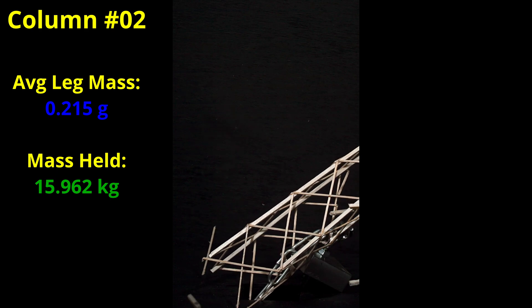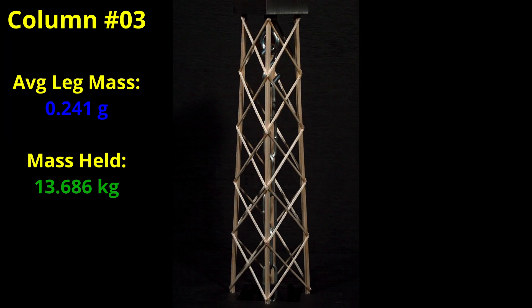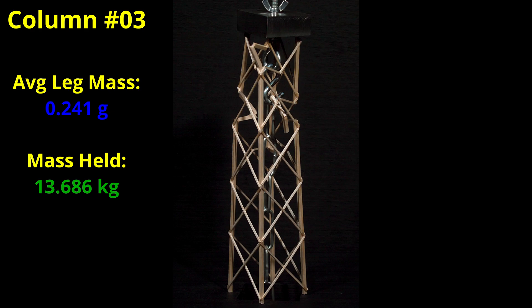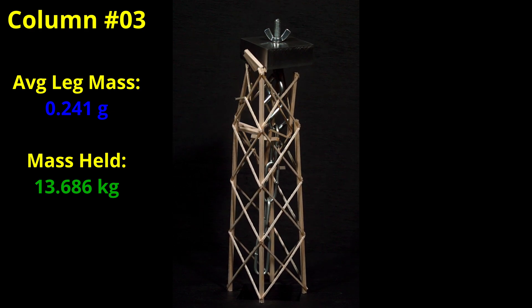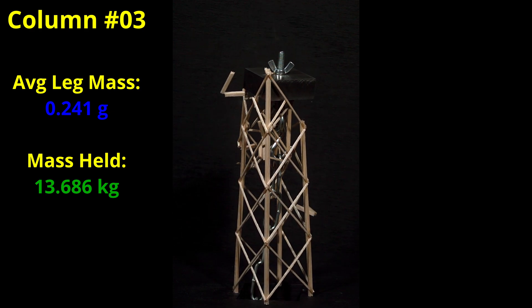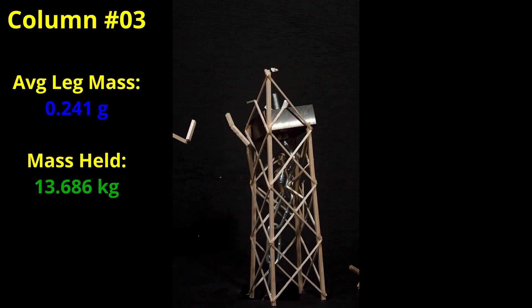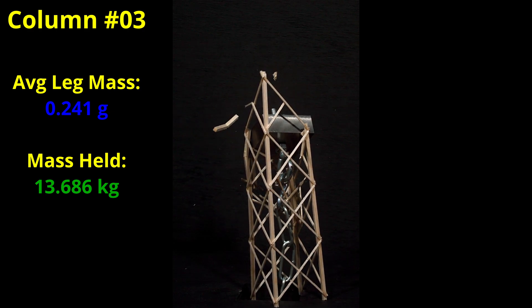This test clearly showed that the legs were plenty strong. I had already built all those other columns so I figured I'd test them and see what happens anyway. This build used legs with a total mass of 0.963 grams for an average of 0.241 grams or roughly 12% more than the previous column. It should easily hold more than the last test, right? Nope. This was the first surprise I got during this testing. It was still a nice isolated leg failure but it only held 13.686 kilograms.